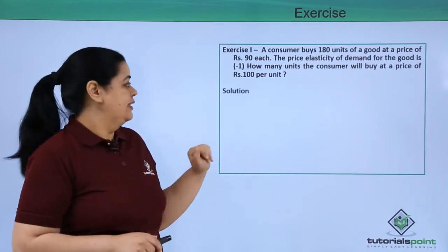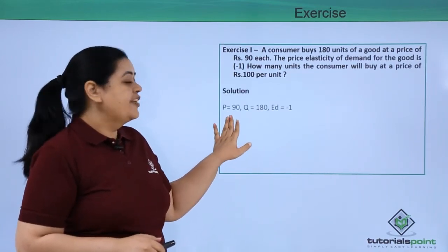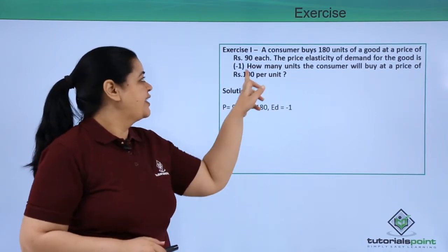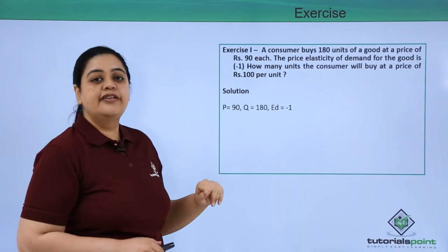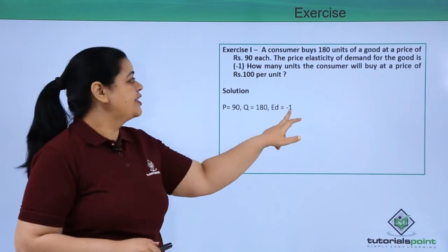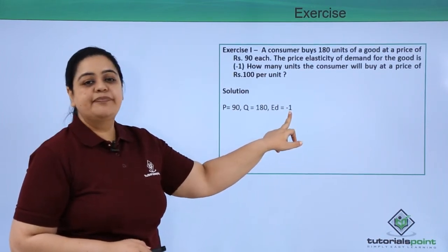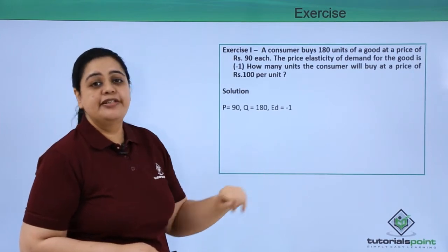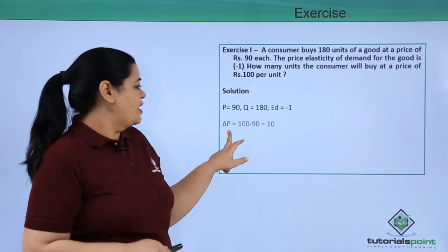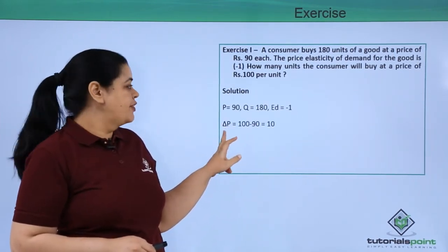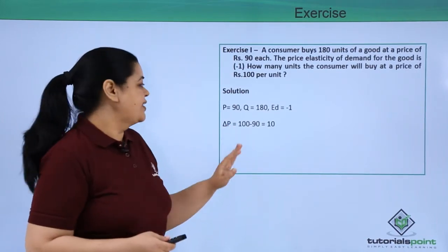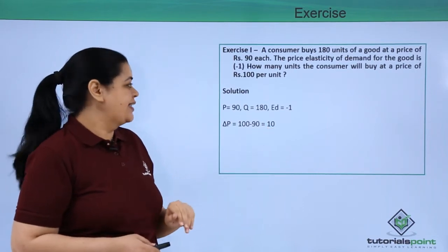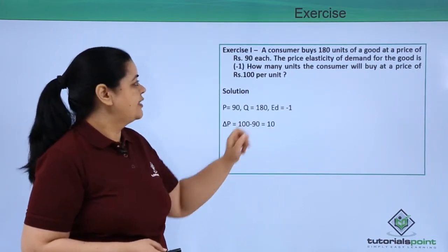So we need to find out: P = 90 which is price, Q = 180 units which is the quantity demanded. We've been told that price elasticity of demand is -1. First I'll find delta P, the change in price, which is 100 - 90 = 10.